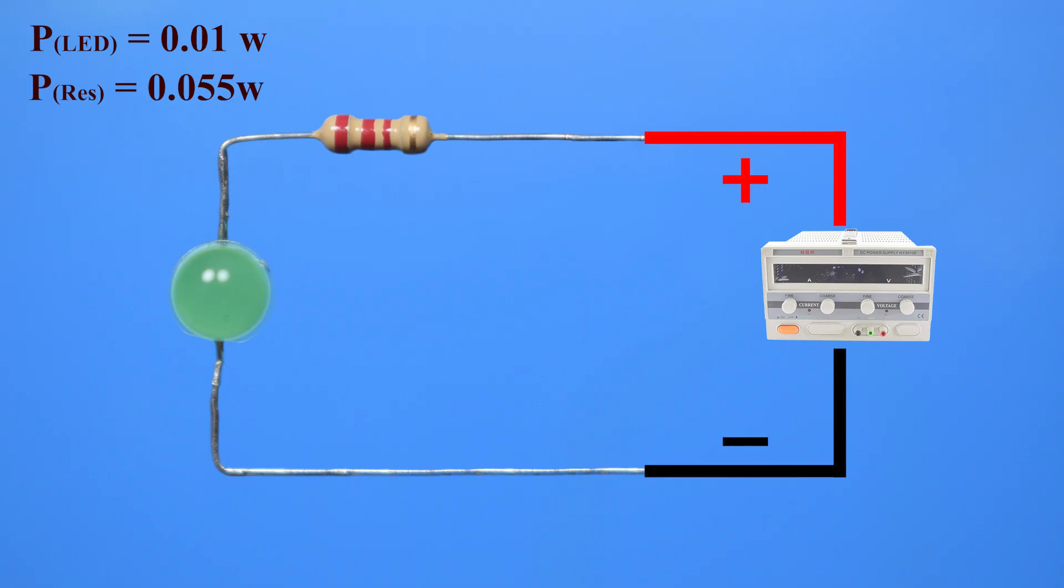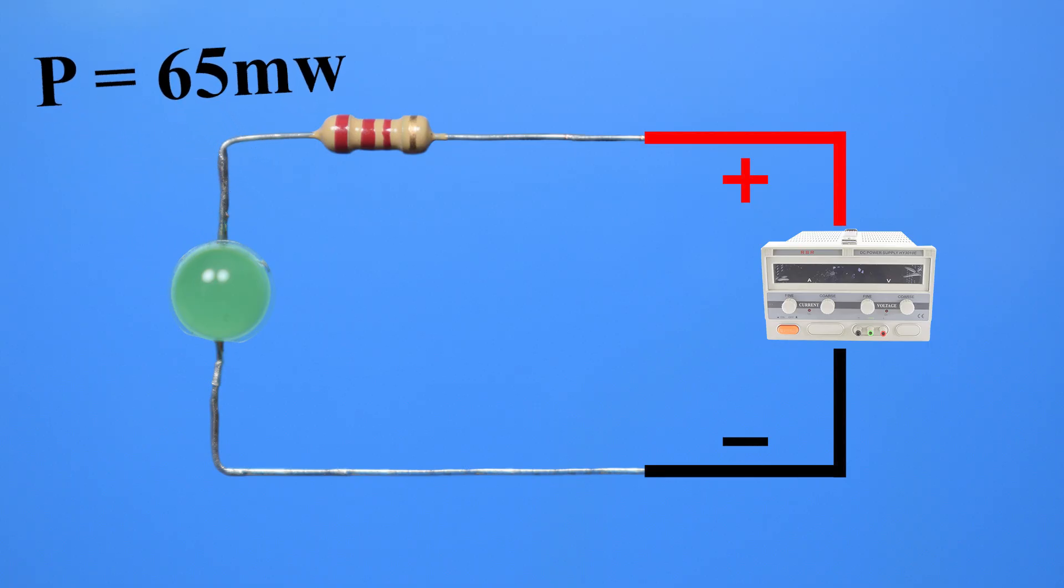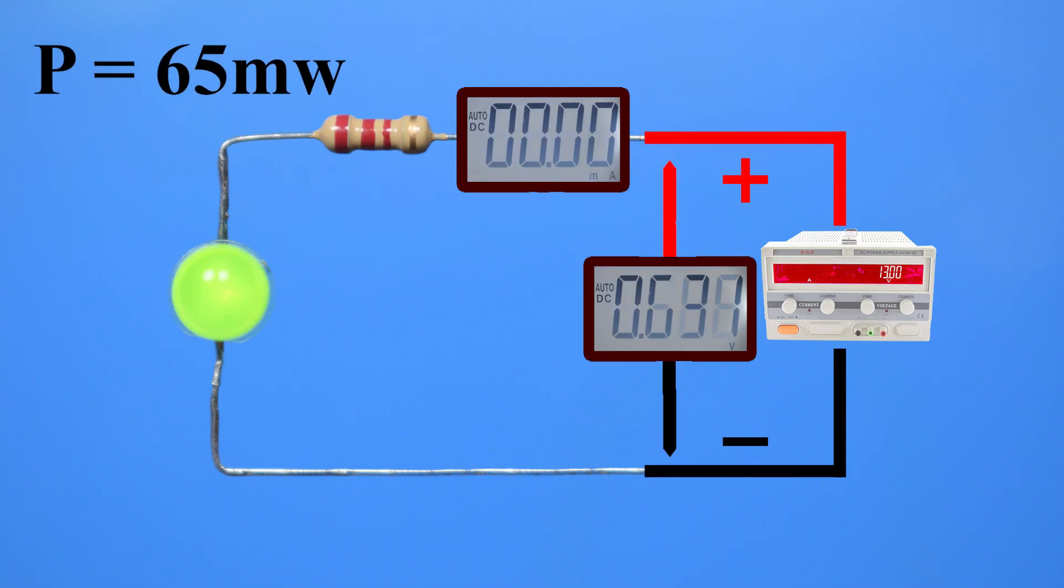Now, let's calculate the total power consumption of our circuit. The total power is the sum of the resistor's power loss and the LED's power consumption. That's 10 milliwatts plus 55 milliwatts, which equals 65 milliwatts. This should match the power delivered by the power supply. The power supply voltage is 13 volts, and the current through the circuit is 5 milliamps. Multiplying these two gives 65 milliwatts, which matches the total power consumed by the resistor and LED.